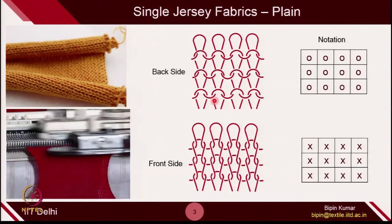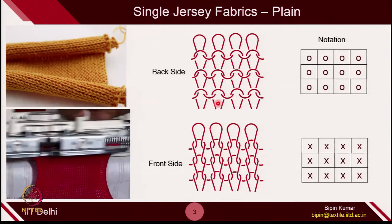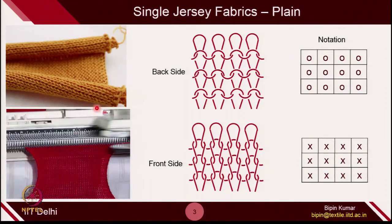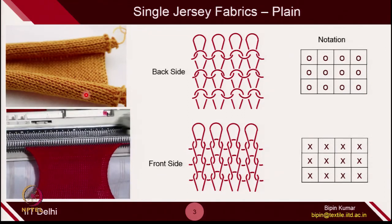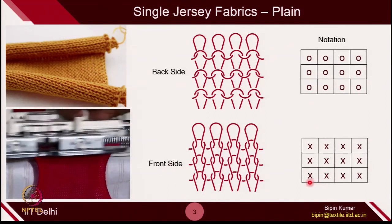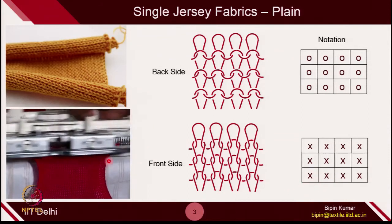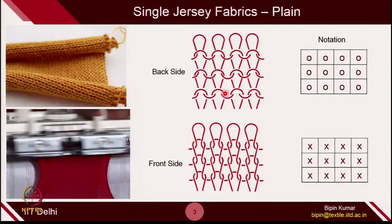In simple plain fabric, created on a single bed machine — hence called single jersey — all loops are either technical front or technical back. This is the actual photo of the fabric. On one side you observe the technical back side of the loop (denoted by a circle in a box), and on the other side you observe the technical front side (denoted by a cross in the box), depending on which side you are looking at. The fabric itself remains the same; only the representation changes.